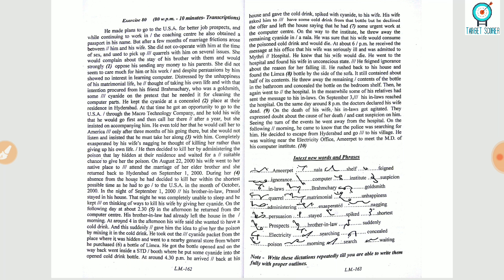Completely exasperated by his wife's nagging, he thought of killing her rather than giving up his own life. He then decided to kill her by administering the poison that lay hidden at their residence and waited for a suitable chance to give her the poison.